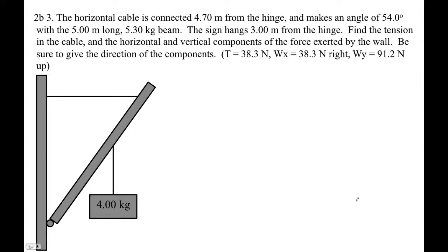All right. Oh, I love this problem. This is awesome. Okay, so let's see. The horizontal cable makes an angle. It's connected 4.7 meters. So this spot is 4.7 meters from the left side. We are going to pivot around that point there. So let's do that, right?